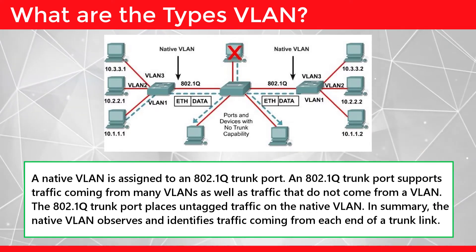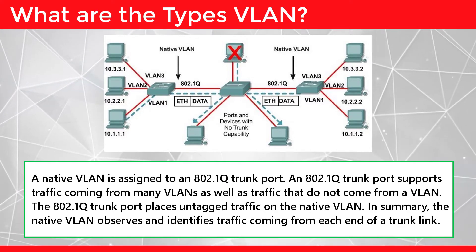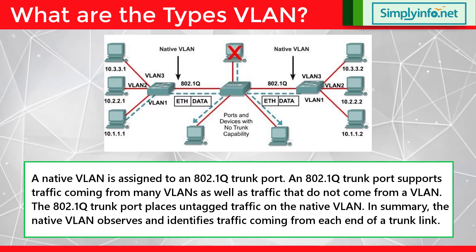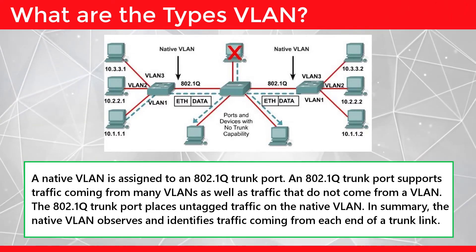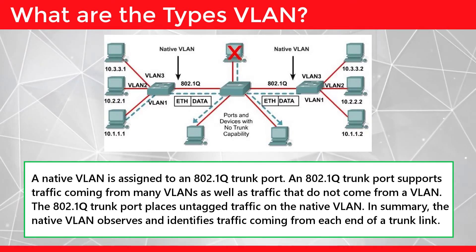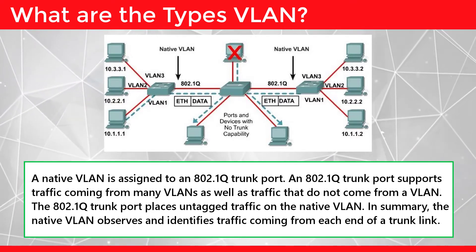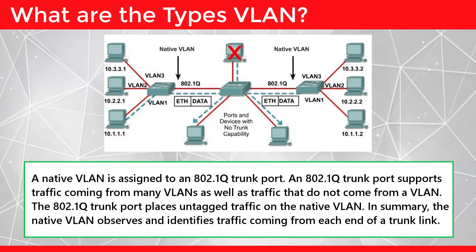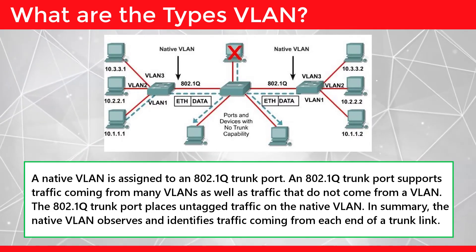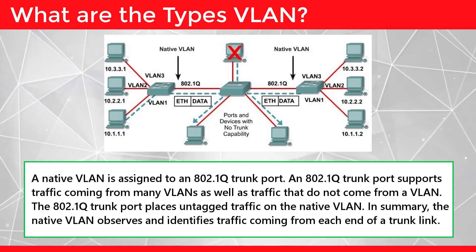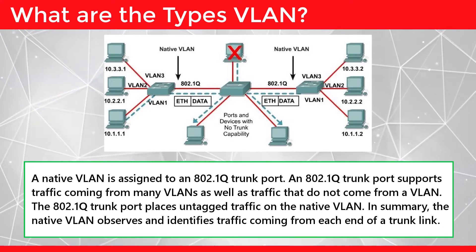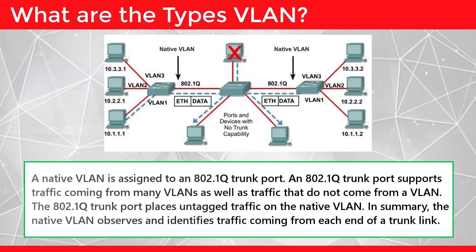A native VLAN is assigned to an 802.1Q trunk port. An 802.1Q trunk port supports traffic coming from any VLANs as well as traffic that does not come from a VLAN. The 802.1Q trunk port places untagged traffic on the native VLAN. In summary, the native VLAN observes and identifies traffic coming from each end of a trunk link.